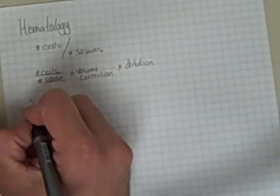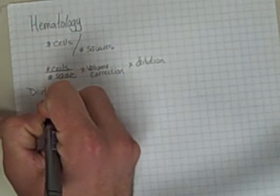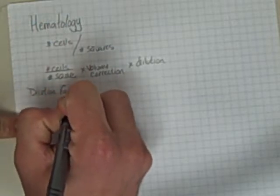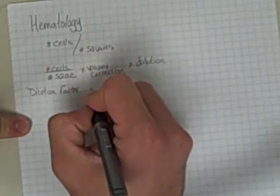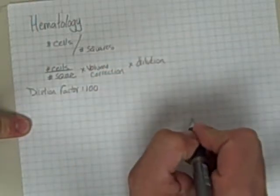So the first step is you dilute it, and we're going to see that our dilution factor is, the dilution is 1 to 100, so we have a dilution factor of 100.